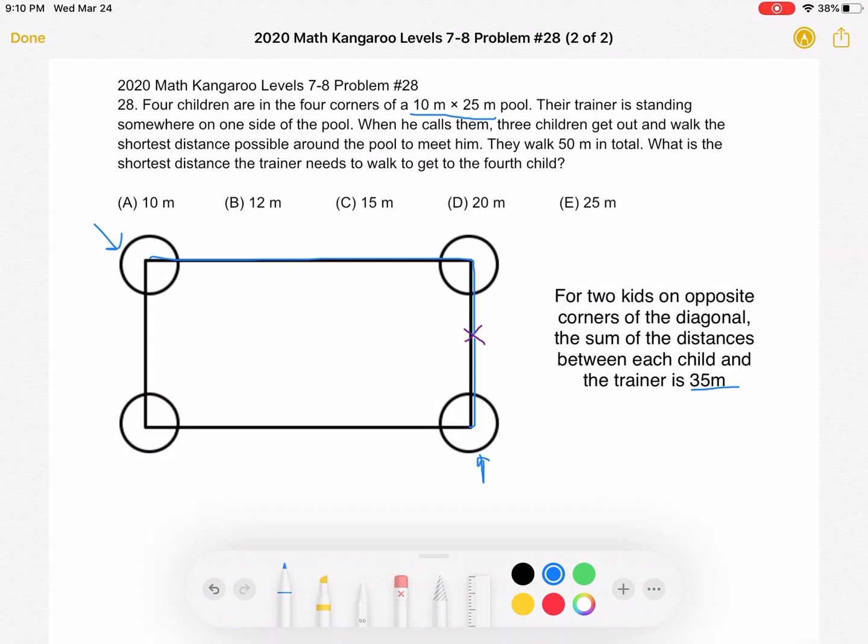So from our problem, we know that we have the three kids that walk 50 meters in total. So if the kids that are diagonally opposite each other walk 35, that third kid must walk 50 minus 35 meters, which is 15 meters. Again, without loss of generality, let's say that third kid is this kid. And that kid walks 15 meters.